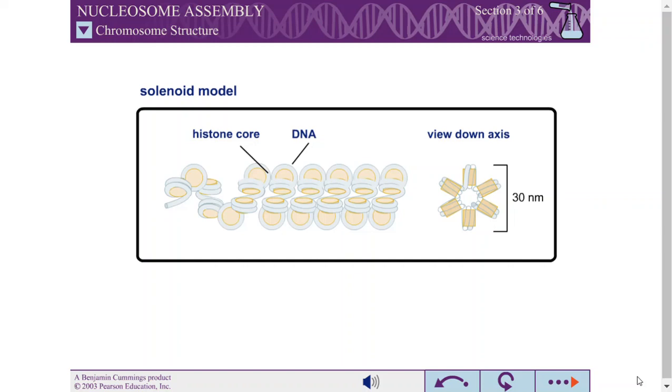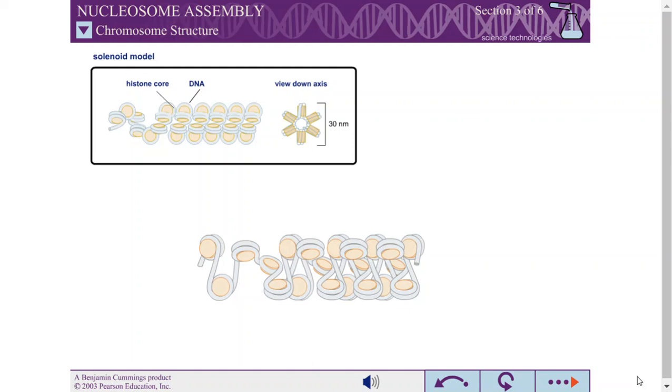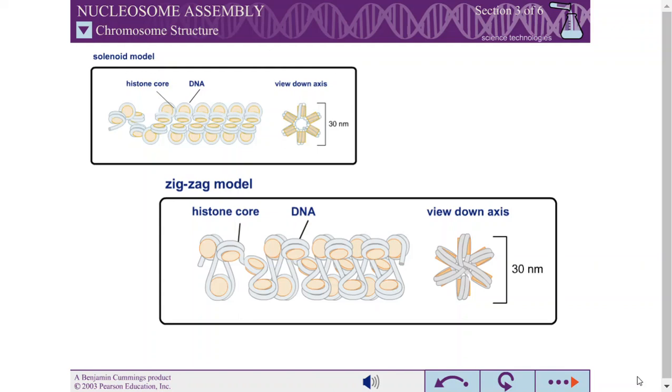A second model for the 30 nanometer fiber is the zigzag model, so named because this type of folding gives the fiber a zigzag appearance. The zigzag form requires longer linker DNA than the solenoid model and thus may be the preferred form in species with longer linker DNA.